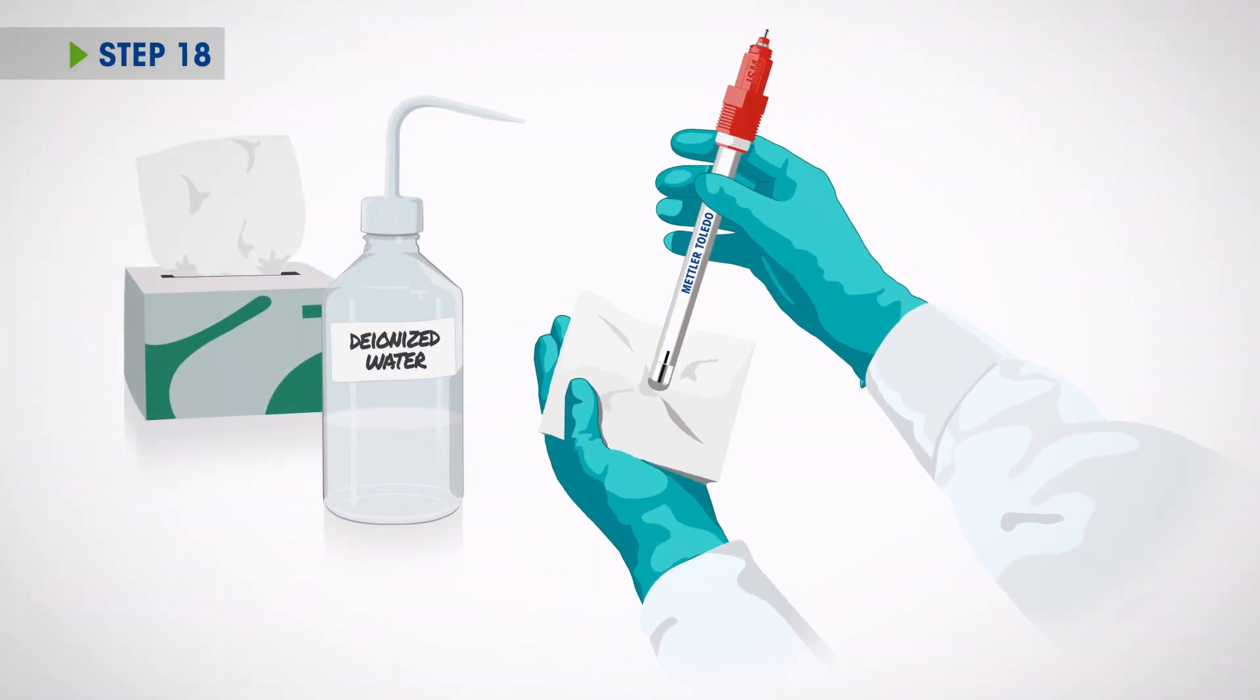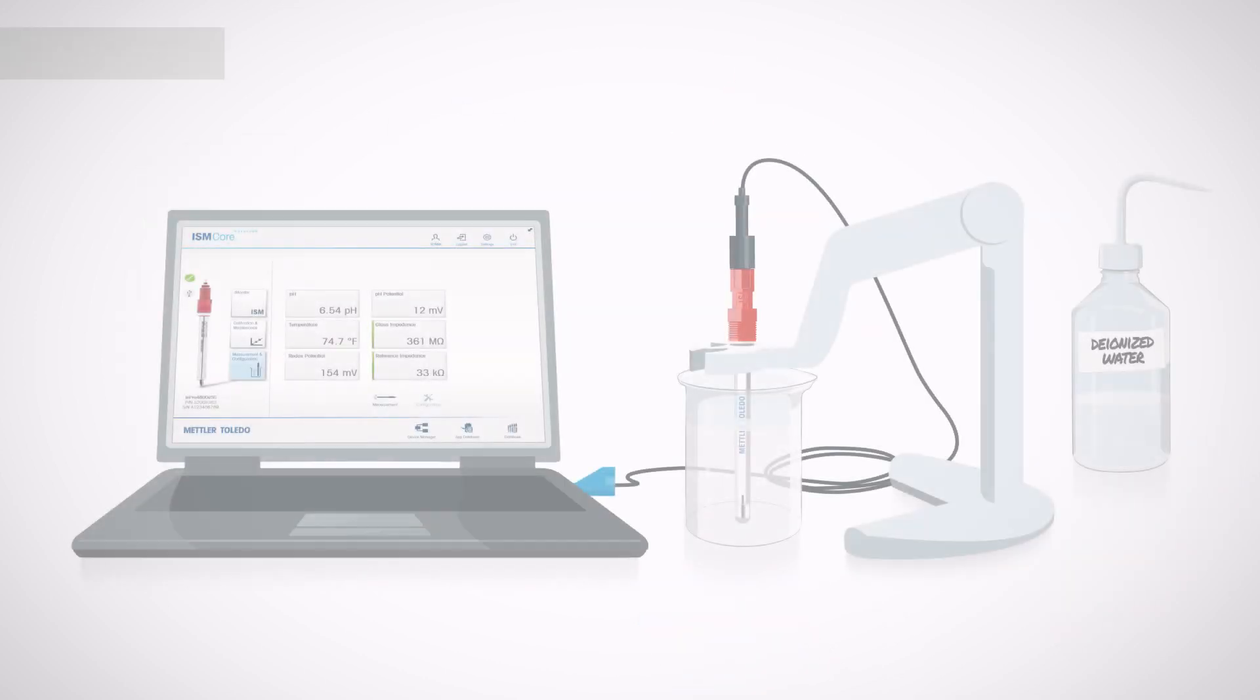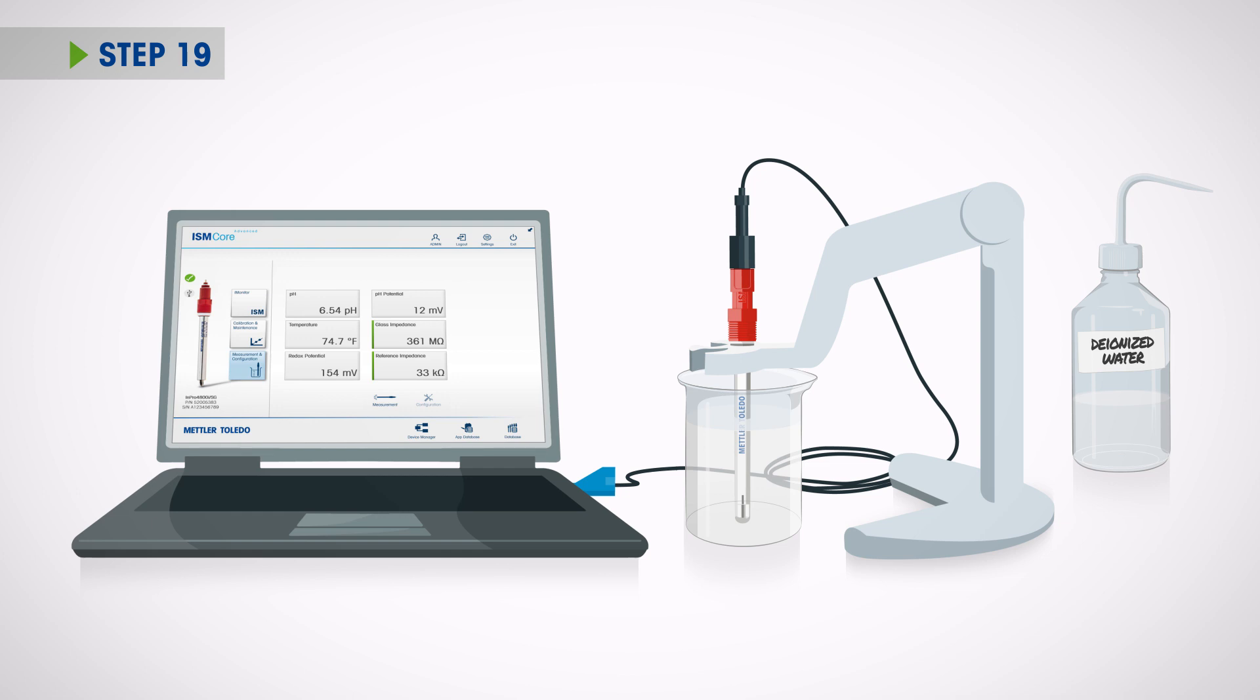Rinse the sensor with deionized water and pat dry. Click the measurement and configuration tab. Place the sensor in pH 7.0 buffer for verification. If the displayed value is not correct, repeat the process from step 11. If the displayed value is correct, rinse the sensor with deionized water and pat dry.